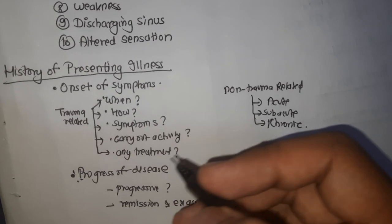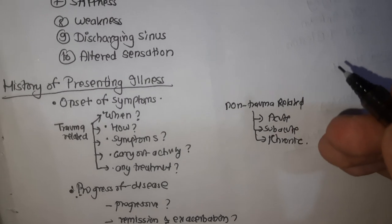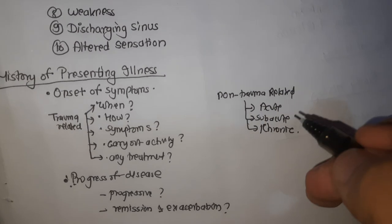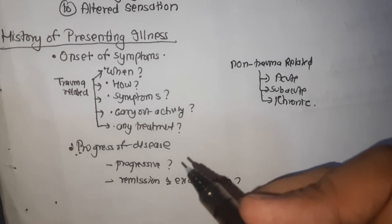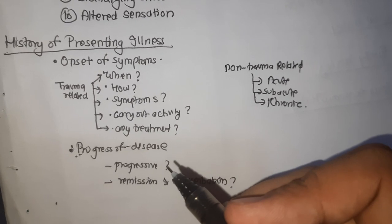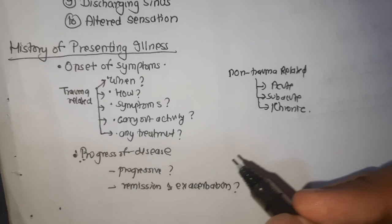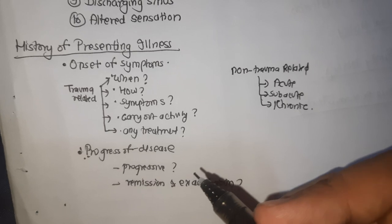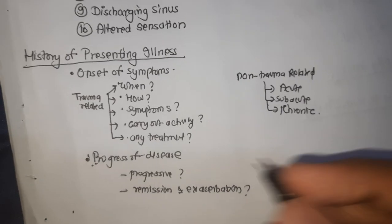Also ask whether the patient received any treatment or attended an accident unit at the time, which suggests the injury was serious. If the disease is not related to trauma, inquire into the type of onset — whether acute, subacute, or chronic. The progress of disease consists of finding out how the symptoms progressed over time: whether it is progressively worsening, has remissions or exacerbations, or comes on suddenly and subsides. Any treatment carried out and its effects should be noted, along with current functional status and severity of pain.